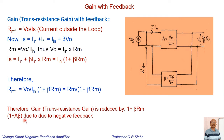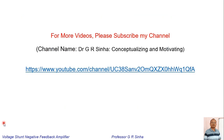By the way, 'due to' has been written twice by mistake — my apology for that. What is important is that by negative feedback, both the trans-resistance gain and the input impedance are reduced by the factor (1 + beta). I hope this lecture helps in understanding the concept of this amplifier. For more similar videos, you can subscribe to my channel — Dr. G. R. Sinha, Conceptualizing and Motivating. Good luck.